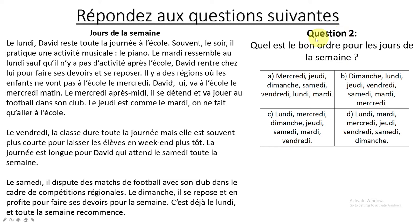Question number two. Quelle est le bon ordre pour les jours de la semaine? One more time: Quelle est le bon ordre pour les jours de la semaine? A — mercredi, jeudi, dimanche, samedi, vendredi, lundi, mardi. B — dimanche, lundi, jeudi, vendredi, samedi, mardi, mercredi. C — lundi, mercredi, dimanche, jeudi, samedi, mardi, vendredi. D — lundi, mardi, mercredi, jeudi, vendredi, samedi, dimanche. You have 10 seconds.